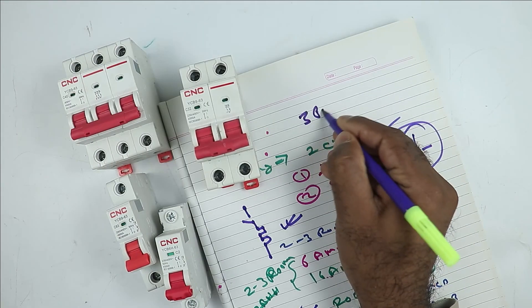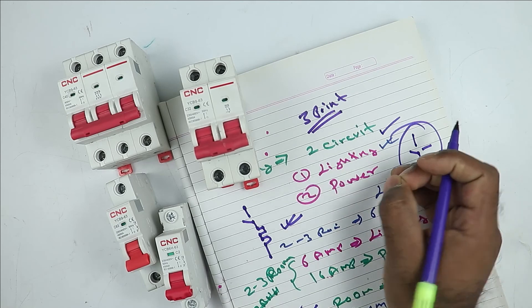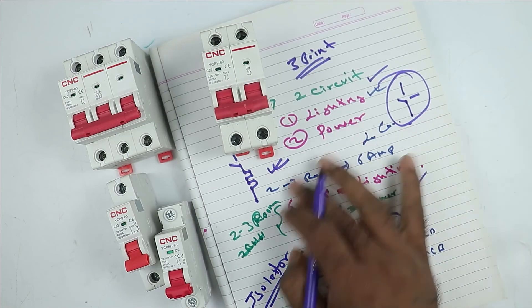So these 3 points that I told you, if you remember these 3 points and go for wiring of your home and installing MCB, then devices in your home will get complete protection.